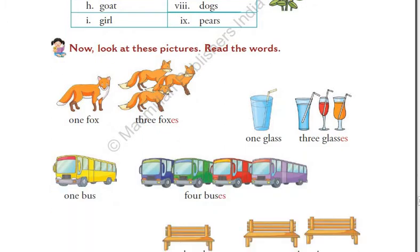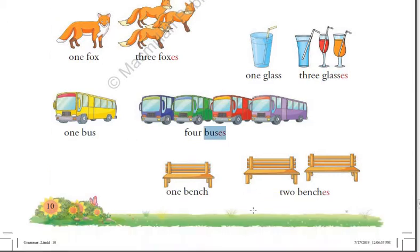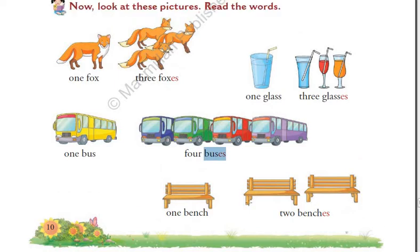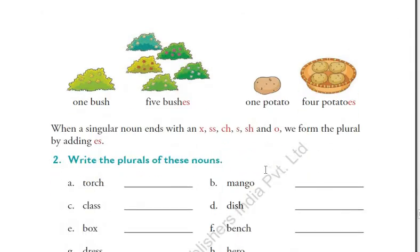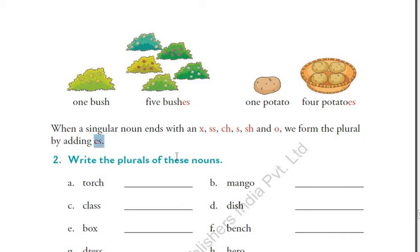Moving on, we saw how plural is formed by adding 'ES' at the end of the word. For example, 'fox' became 'foxes' and 'glass' became 'glasses,' just by adding 'ES.' Here is a hint for you: if any word ends with X, double S, CH, S, SH, or O — only then do you add 'ES' at the end.